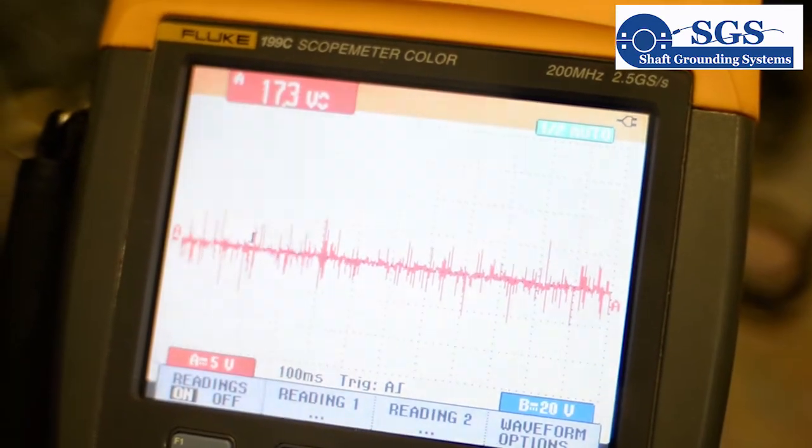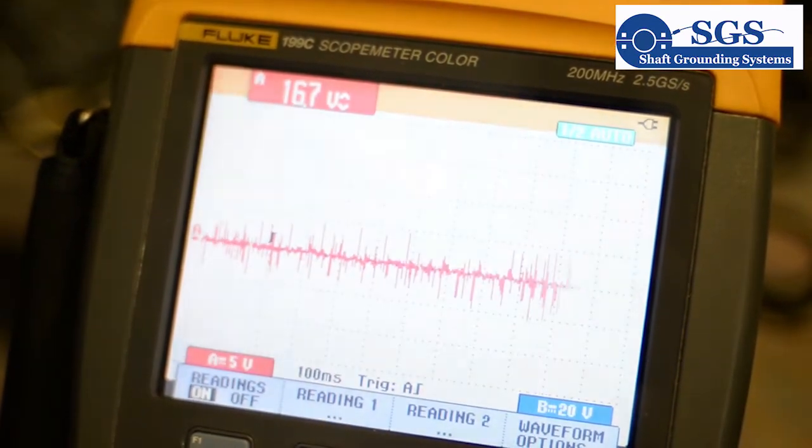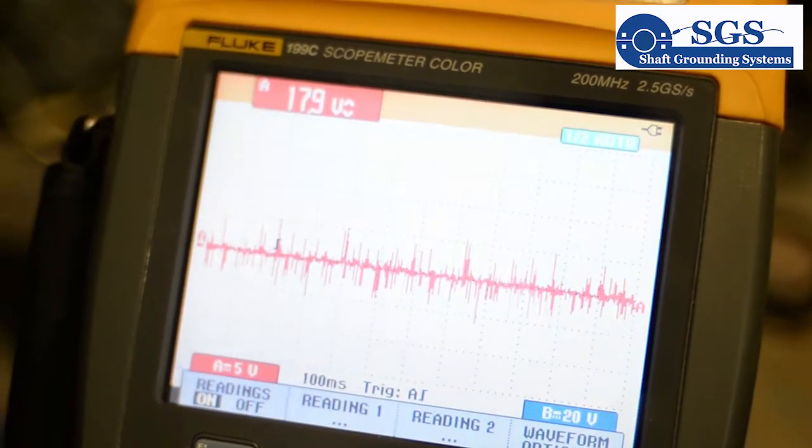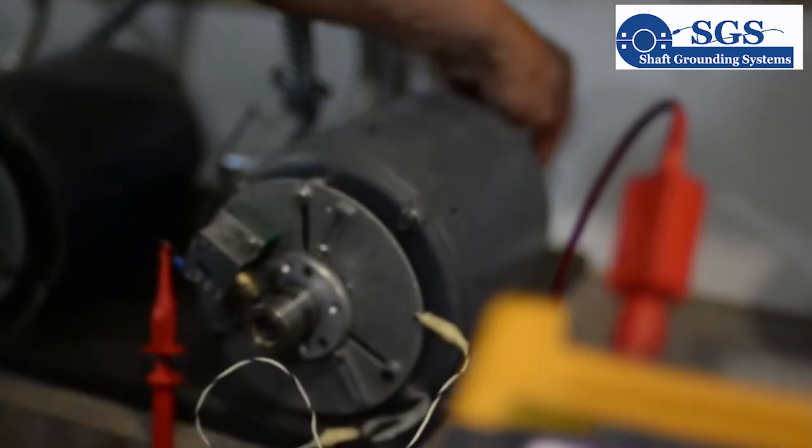What we do at shaft grounding is we build systems that put the front frame of the motor and the shaft of the motor at the same potential. How we do that is a small brush that goes into our system on the back of the motor.